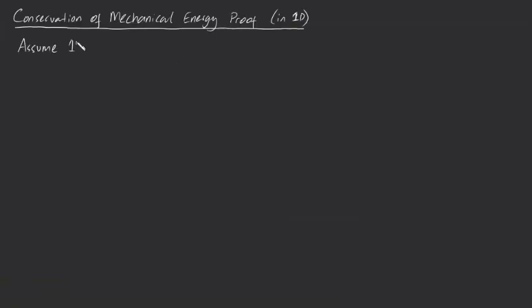Alright let's assume we have a simple one-dimensional system with the following equation of motion. Mx double dot, that's your mass times acceleration, is equal to your external forces acting on your particle, f of x. Now I'm keeping f incredibly generic, I'm just saying it's some function of position. And my aim for this video will be to prove that from this equation of motion, this very general equation of motion, we can derive the conservation of mechanical energy.